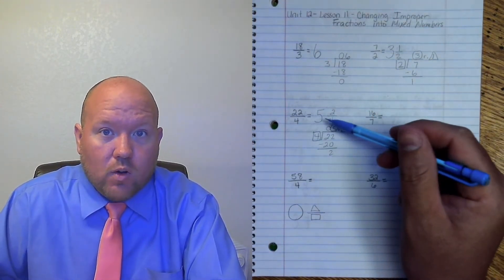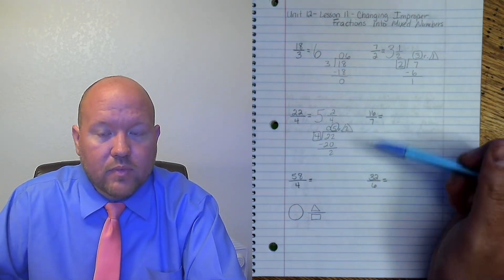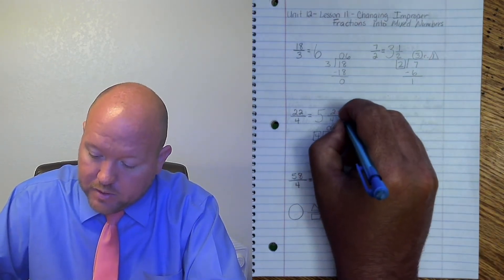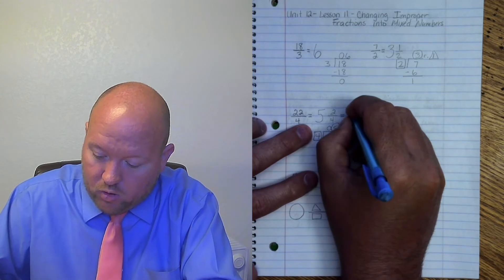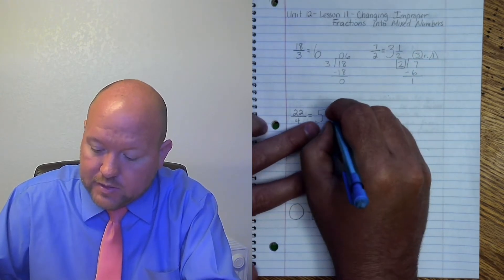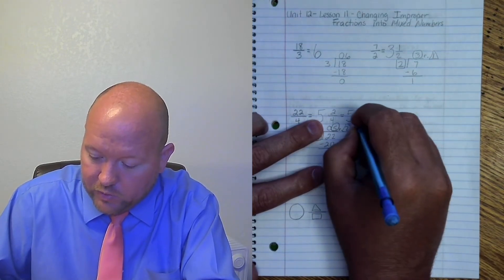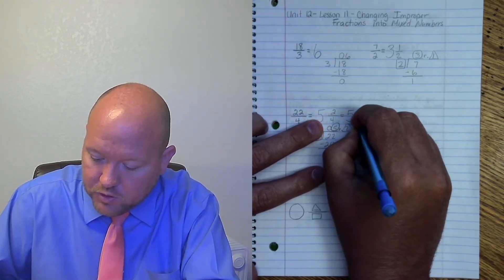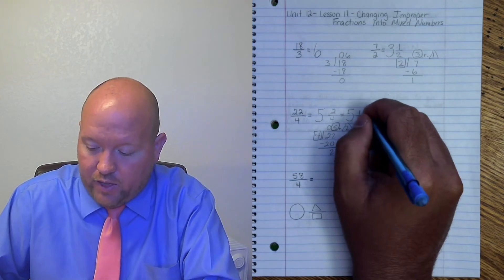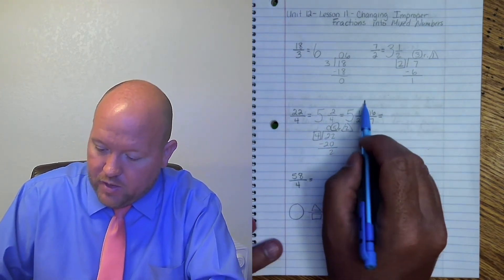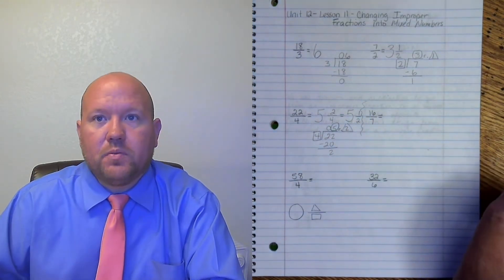Now that answer is correct. But what do you notice about 2 and 4? Those are both even. So we can simplify this. We're going to bring our whole number over. Simplify. We can divide that by 2. 2 divided by 2 is 1. 4 divided by 2 is 2. So 5 and 1 half.